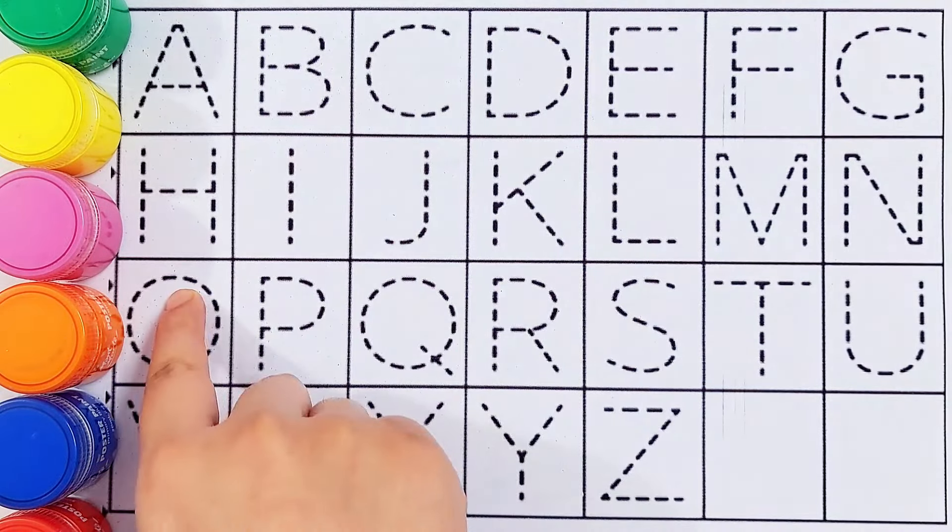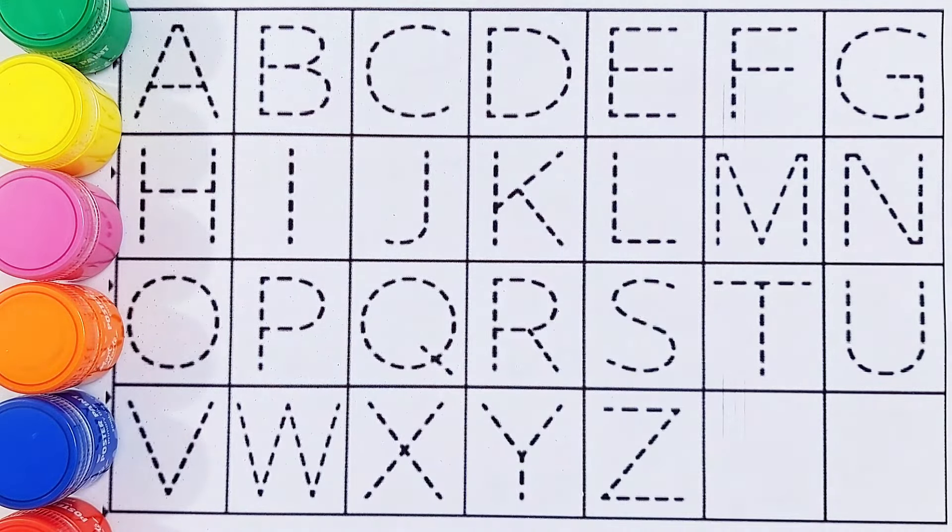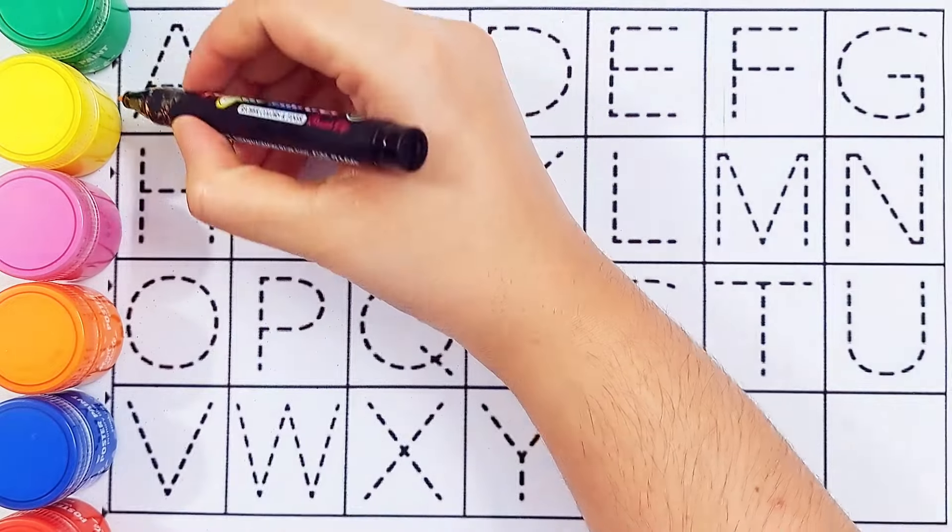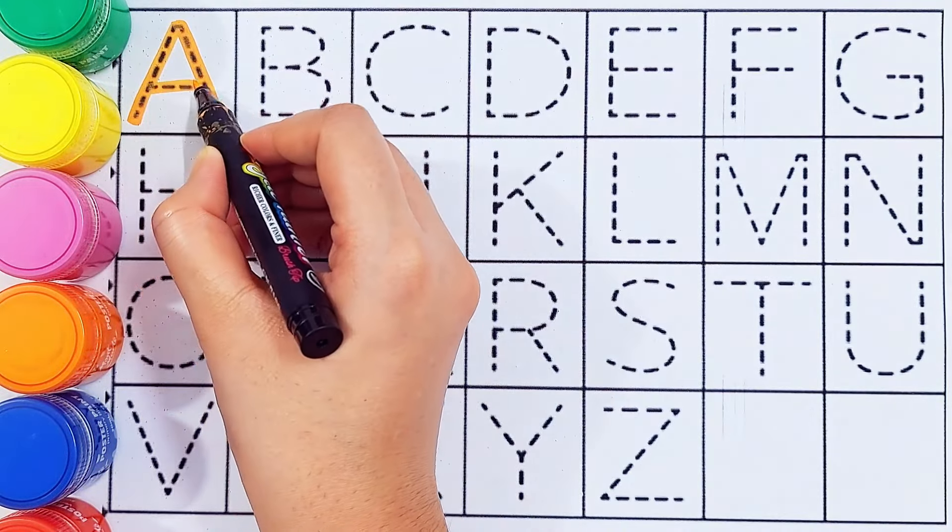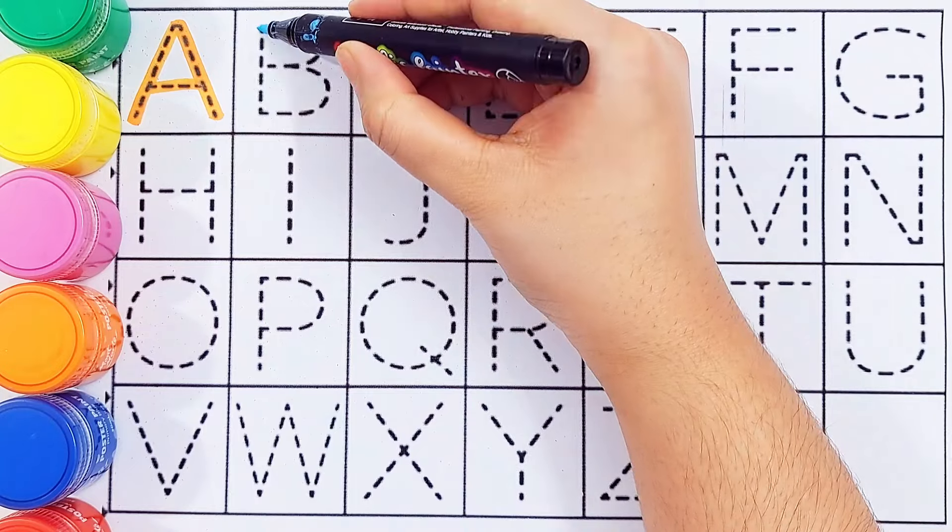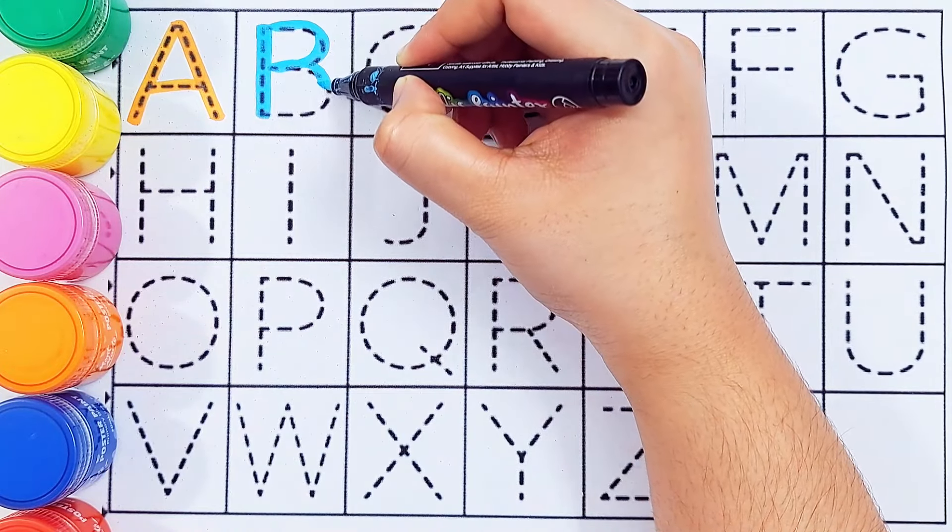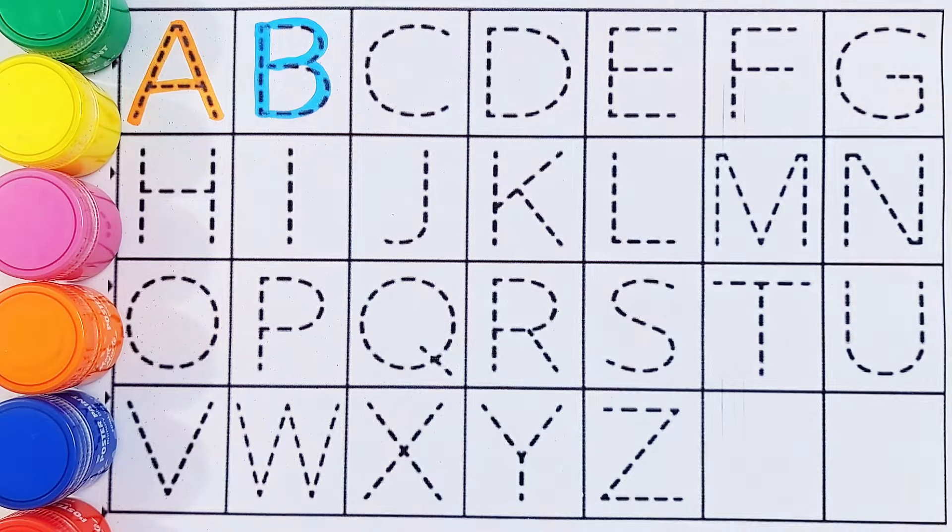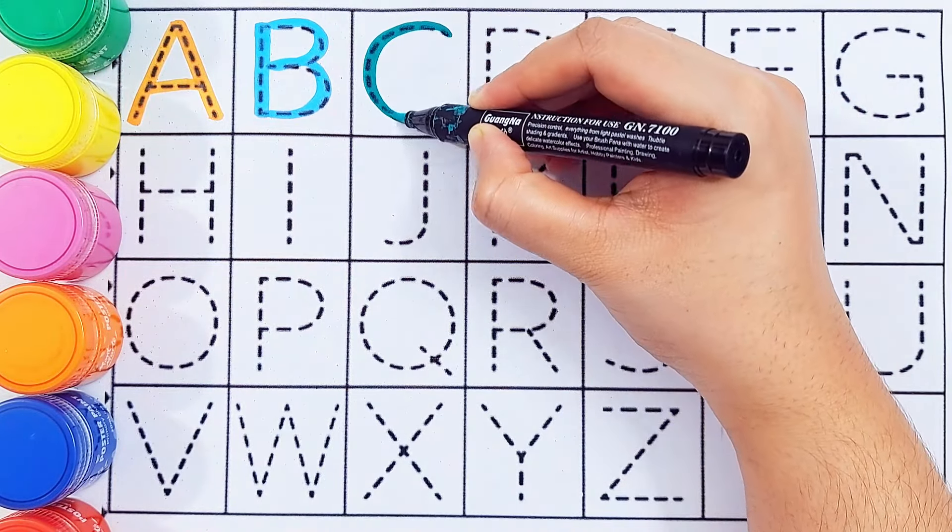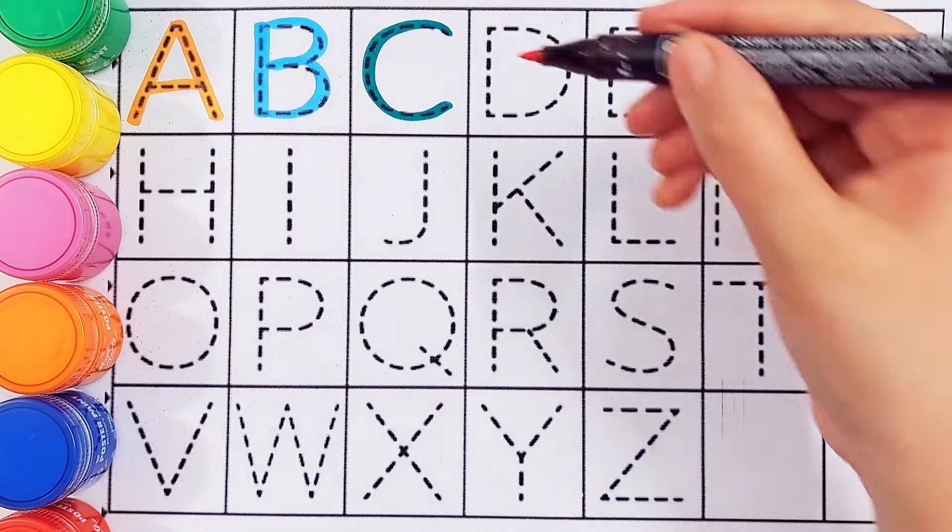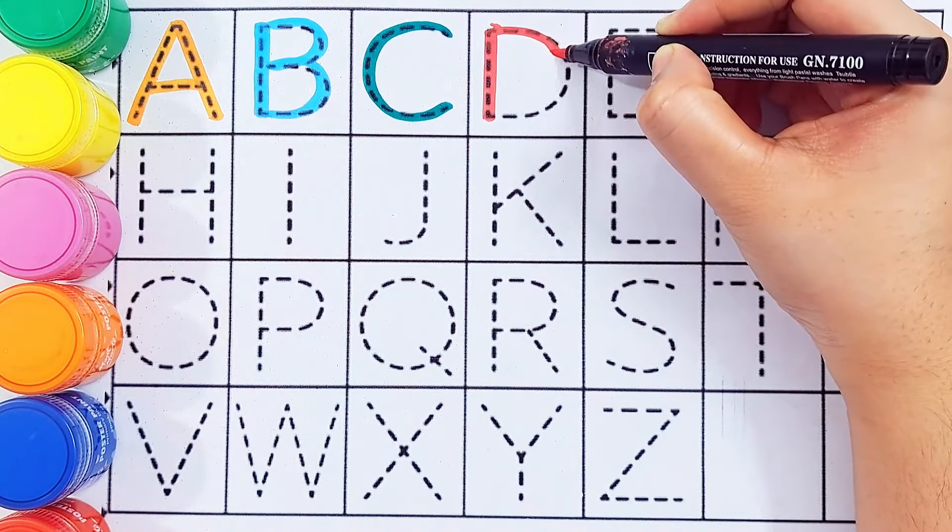Today we will try to learn some alphabets A B C D. A, A for avocado. B, B for basket. C, C for carrot. D, D for dog.